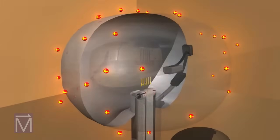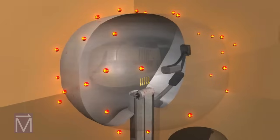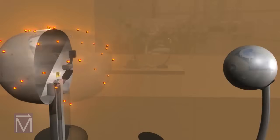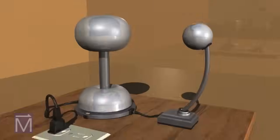They will accumulate on the sphere until an object, such as this grounded wand, comes close enough to discharge it. Then, as long as the rollers keep rolling, the cycle will begin once again.